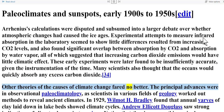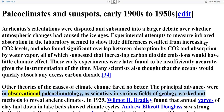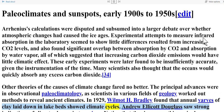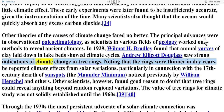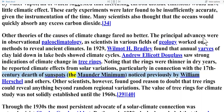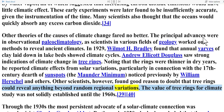Other theories of the causes of climate change fared no better. The principal advances were in observational paleoclimatology. In 1929, Wilmot H. Bradley found that annual varves of clay laid down in lake beds showed climate cycles. Andrew Ellicott Douglass saw strong indications of climate change in tree rings, noting that the rings were thinner in dry years, and reported climate effects from solar variations — particularly in connection with the 17th century dearth of sunspots, the Maunder Minimum. Other scientists, however, found good reason to doubt that tree rings could reveal anything beyond random regional variations; the value of tree rings for climate study was not solidly established until the 1960s.